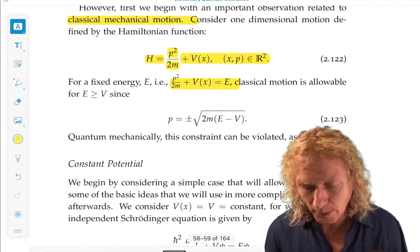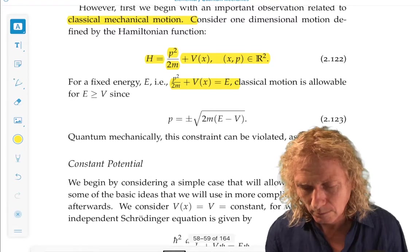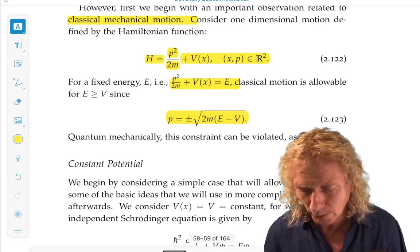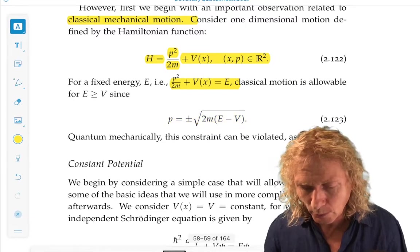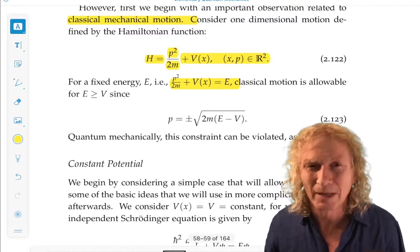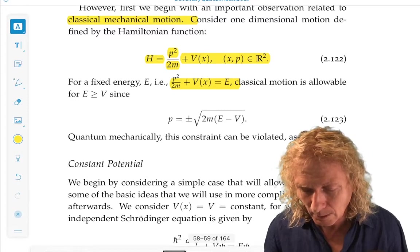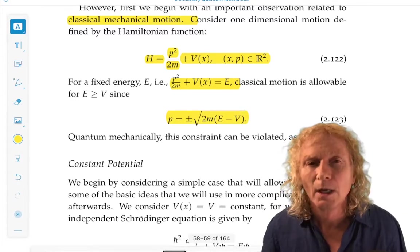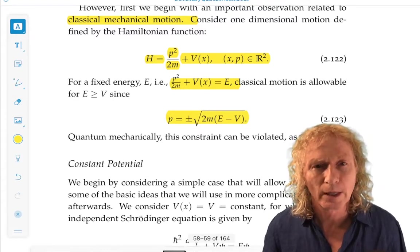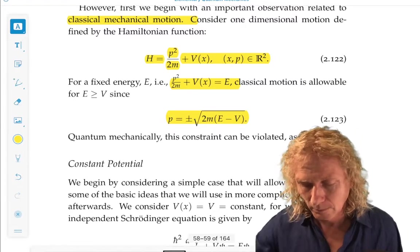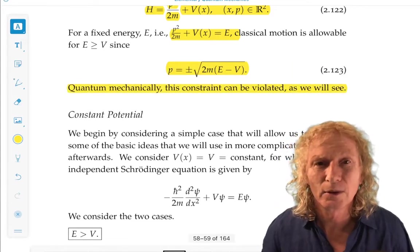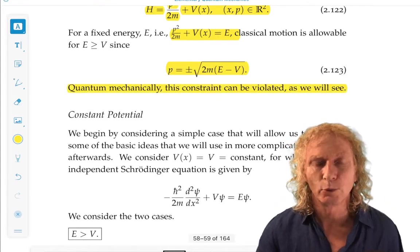We can solve for p, and we get a positive p and a negative p. But pay close attention to this. Whenever you get square roots, you need to make sure that the quantity underneath the square root is positive, or have some good reason if it isn't. This is classical mechanics, classical momentum. So this only makes sense when the total energy is larger than the potential energy. However, quantum mechanically, this constraint can be violated, as we will see.